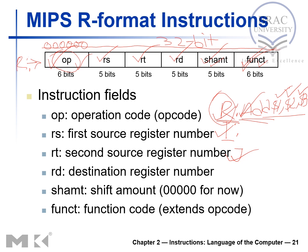For example, encoding ADD $1, $2, $3: source 1 is register 2 (binary 00010), source 2 is register 3 (binary 00011), destination is register 1 (binary 00001), and there is no shifting so shift amount is all zeros. The function field value for ADD would be filled in from the manual — this gives us the full 32-bit representation of the ADD instruction.